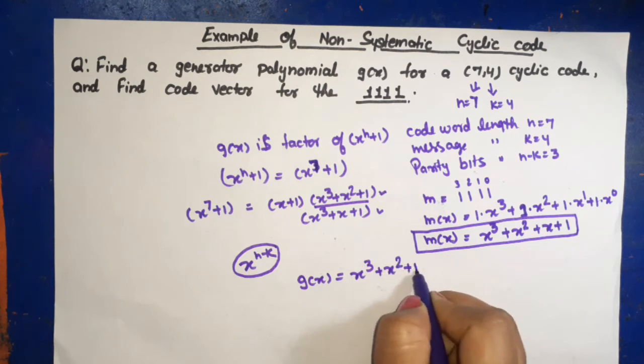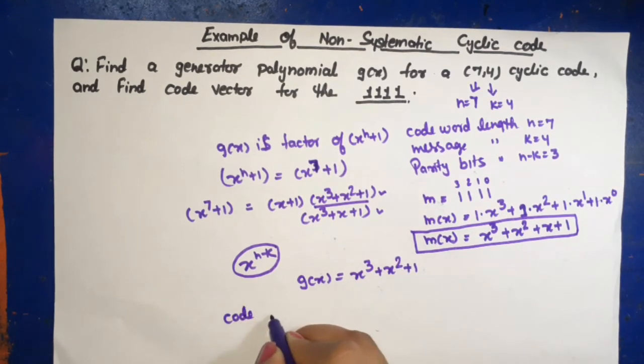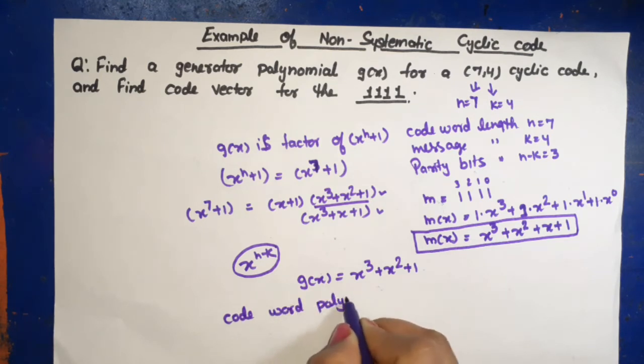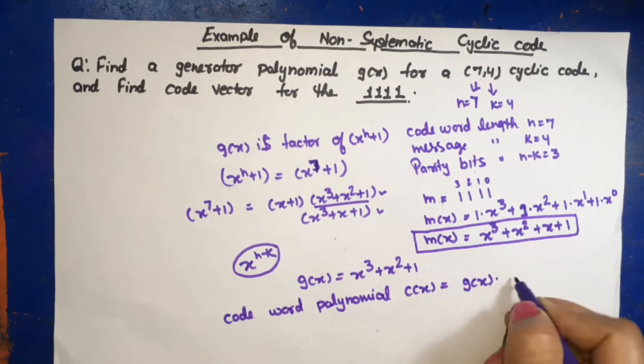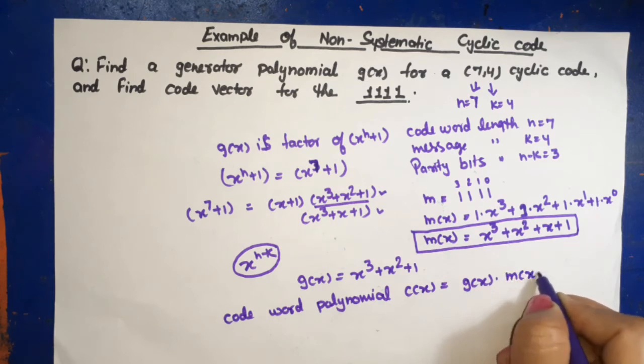Now code vector, code word polynomial c(x) is equal to g(x) into m(x), multiplication.